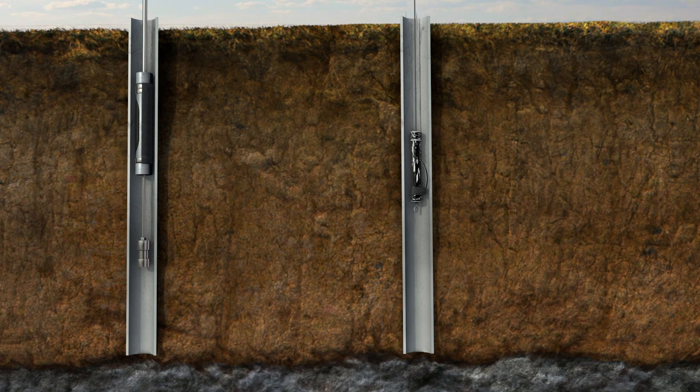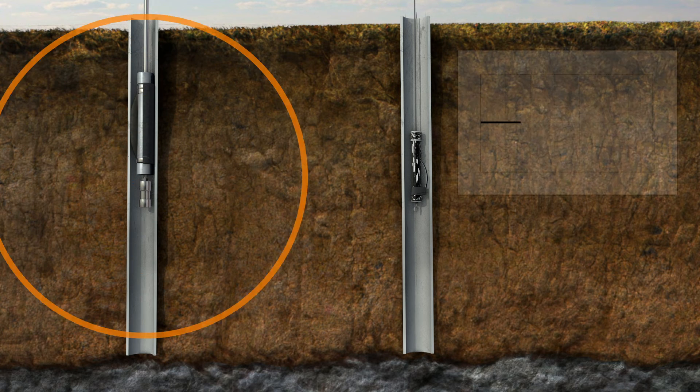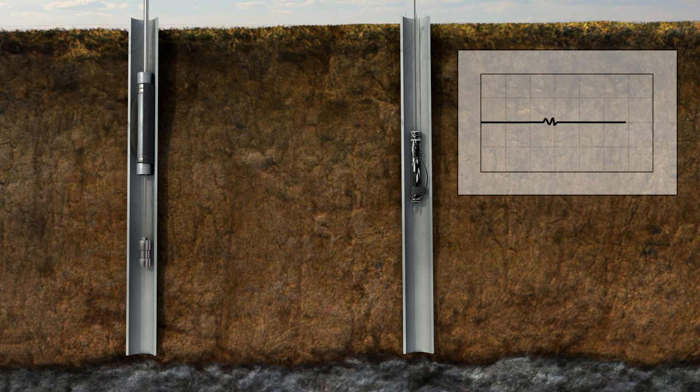Cross hole seismic testing, a down hole method, uses a source and receiver in adjacent boreholes for direct in situ measurement of shear wave velocity. All seismic methods use similar principles to provide measurement of small strain soil properties and interpretation of stratigraphy.